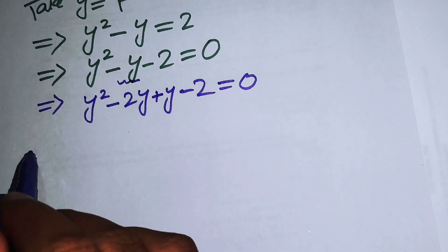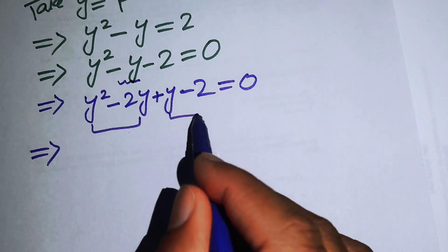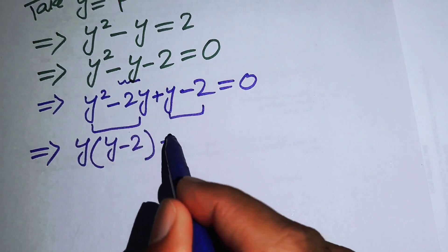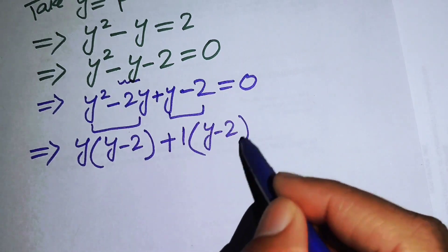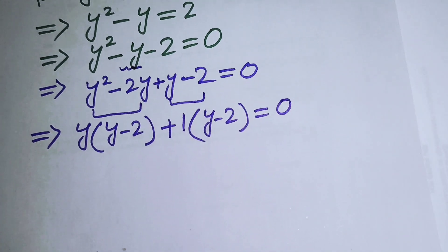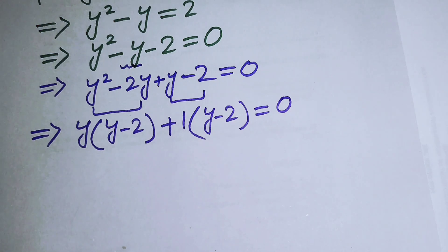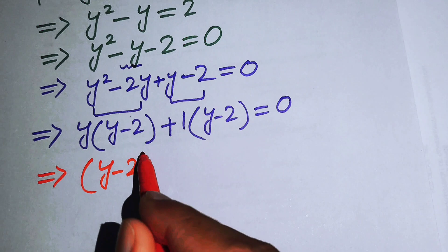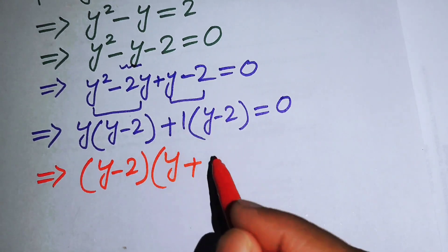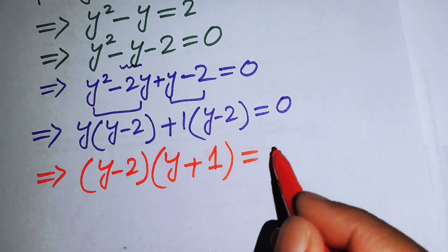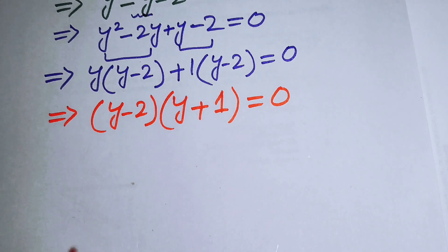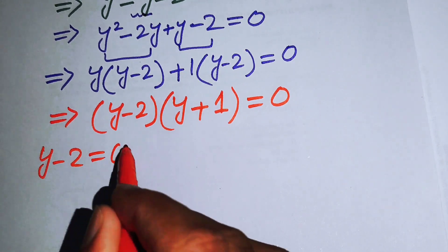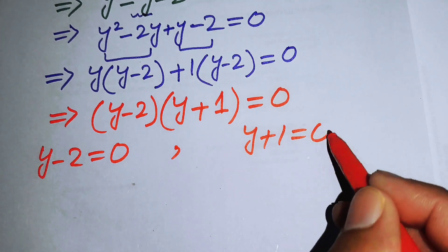This is now in quadratic form, so we make factors by breaking the middle term −y as −2y + y. Taking y common from the first two terms gives y(y − 2), and taking +1 common from the next two terms gives +1(y − 2). So we get (y − 2)(y + 1) = 0, giving two cases: y − 2 = 0 and y + 1 = 0.